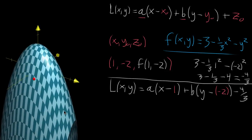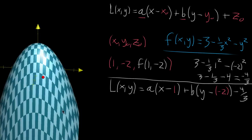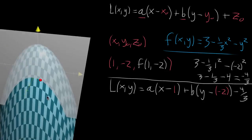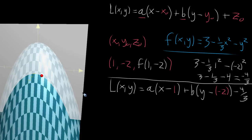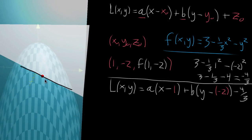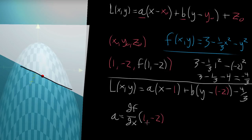The whole idea of a tangent plane is that the partial derivative with respect to x should match that of the original function. If we want the partial derivative with respect to x, and you imagine moving purely in the x direction, this intersects the graph along some curve, and the partial derivative at this point tells you the slope of the tangent line in that direction. The tangent plane should have that same slope — so we set A equal to the partial derivative of f with respect to x, evaluated at (1, -2).